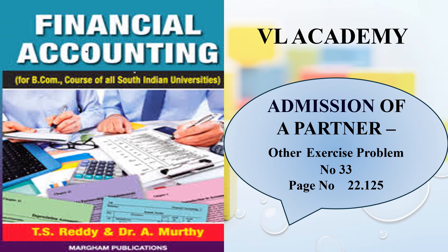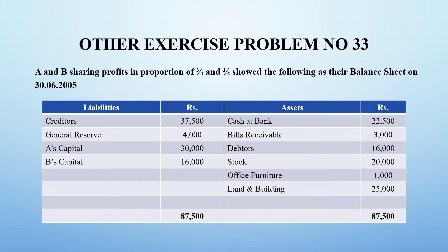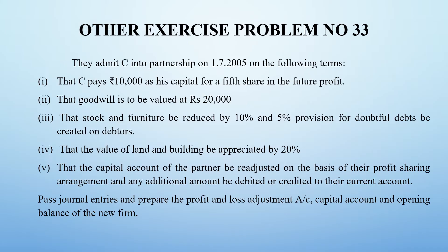Welcome to VL Academy. In this video, we are solving the admission of a partner - Exercise Problem Number 33, Part B, from page 22.1 to 5. The question is parts A and B. Partners are in a 3:1 ratio and the profit share is given. C has paid 10,000 as capital for a one-fifth share of future profit, and goodwill of the firm is valued at 20,000.